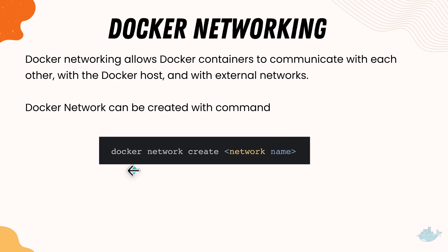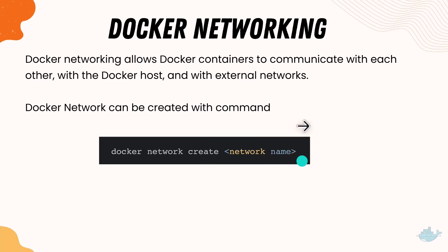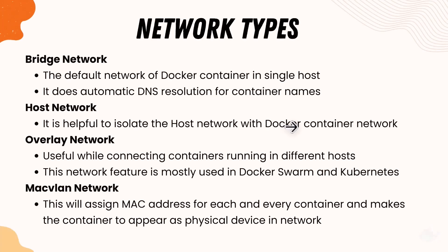Docker networks can be created with a straightforward command, pretty much like how we do the creation of a Docker volume. All you have to do is `docker network create` and then the network name, and it creates the network for you — just like `docker volume create` followed by the volume name creates a volume.